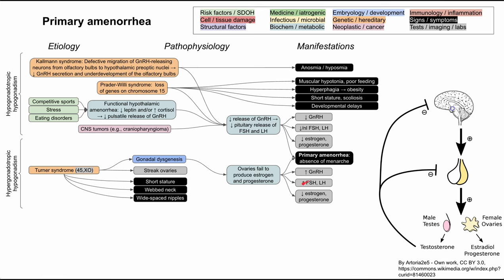GnRH and FSH are high in Turner syndrome because the feedback loop isn't happening — there's no estrogen or progesterone to feed back and inhibit GnRH and FSH/LH, so those will be high while estrogen remains low. Other causes of gonadal dysgenesis include standard ovarian dysgenesis with a normal karyotype, and Swyer syndrome, which occurs with a male karyotype of 46,XY but also leads to gonadal dysgenesis.